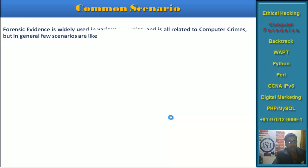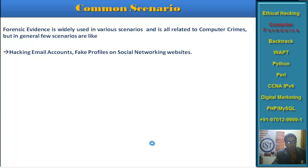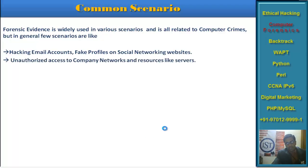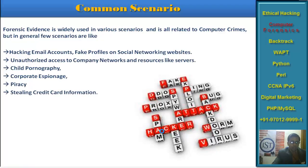Common scenarios where cybercrime or forensic evidence is widely used include: hacking email accounts — even reading someone's email without permission while they stepped away is a crime. Fake profiles on Facebook, Twitter, or other social networking websites — creating fake profiles of celebrities is a crime. Unauthorized access to networks, web servers, and FTP servers. Also, child pornography, corporate espionage, and piracy — which is really damaging. Stealing credit card information — there are many websites where credit card information is publicly disclosed.